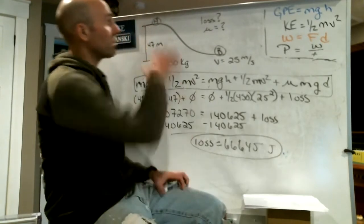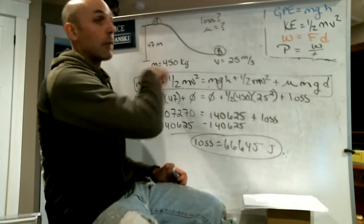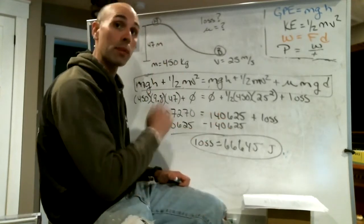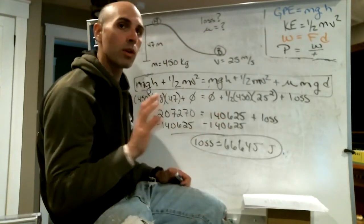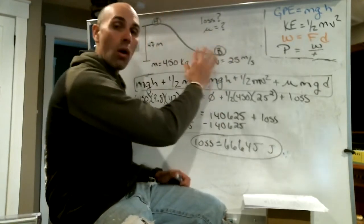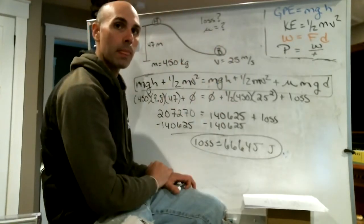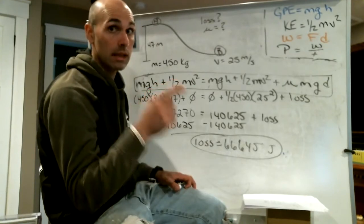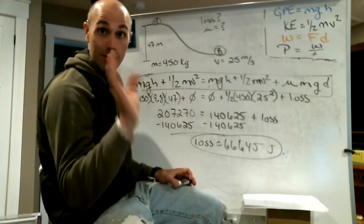We find that the loss of energy equals 207,270 minus 140,625 = 66,645 joules. Think about that — you started with all this energy at the top and, in a perfect world, all of it would transfer to the bottom. But it doesn't. It was thundering and lightning when I recorded this, but let's keep going.